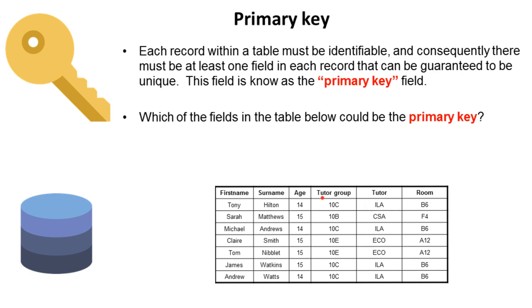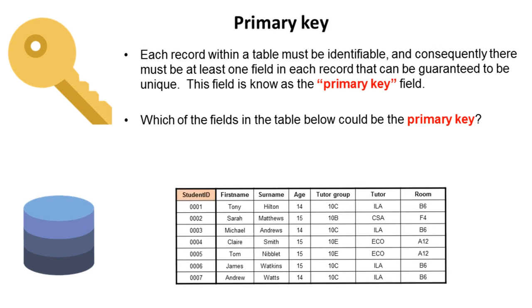So if you look at this table of students, which field could be our primary key? At first it seems maybe first name could — after all, the value Tony is unique. But you have to think about the future of a database. When this database grows to say a thousand students, what's the chance of more than one person having the first name Tony? Quite likely. So this can't be the primary key. The same goes for all of these — there'll be more than one student with the same age or the same tutor group. We can't guarantee any field in this table won't be duplicated when new entries are added. In this circumstance, we simply add our own unique student ID and make this our primary key.